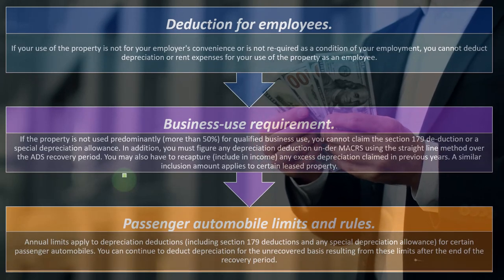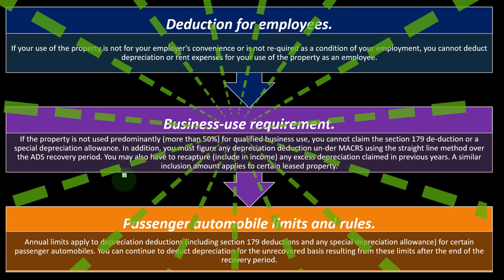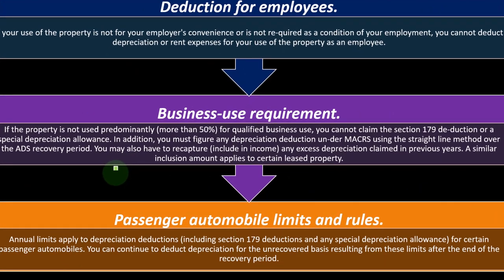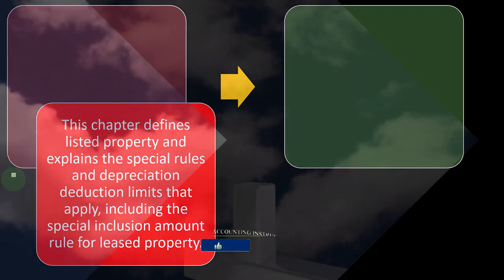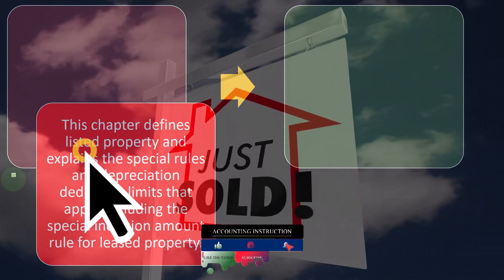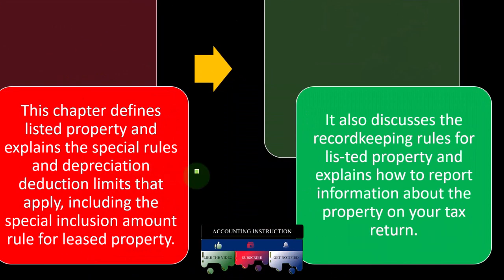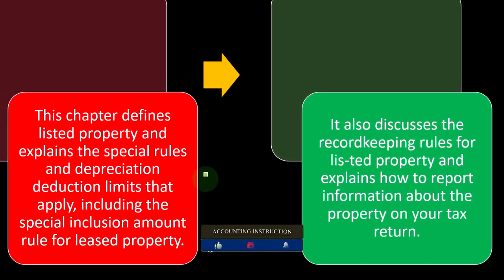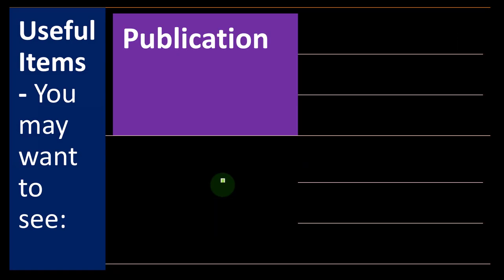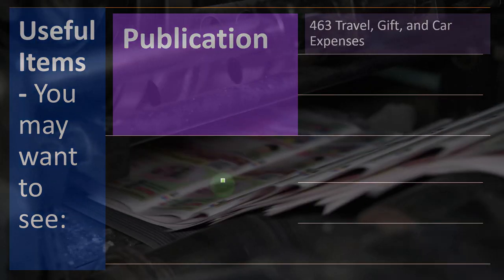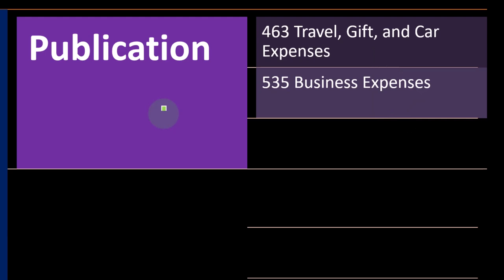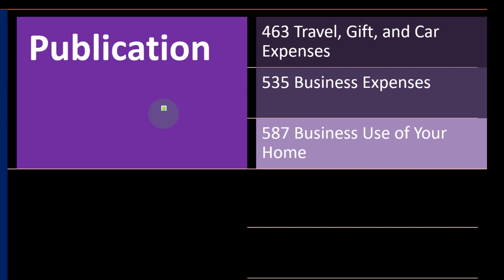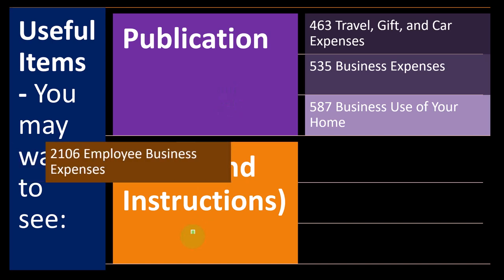Passenger automobile limits and rules: annual limits apply to depreciation deductions, including the Section 179 deduction and any special depreciation allowance for certain passenger automobiles. You can continue to deduct depreciation for the unrecovered basis resulting from these limits after the end of the recovery period. This chapter defines listed property, explains the special rules and depreciation deduction limits that apply including the special inclusion amount rule for leased property, discusses record-keeping rules for listed property, and explains how to report information on your tax return. Useful related publications include Publication 463 — travel, gift, and car expenses; Publication 535 — business expenses; and Publication 587 — business use of your home.